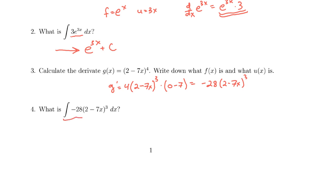And so because of that, down here we see that we're exactly trying to integrate negative 28 times 2 minus 7x to the 3rd. We know immediately that this should become 2 minus 7x to the 4th plus c.